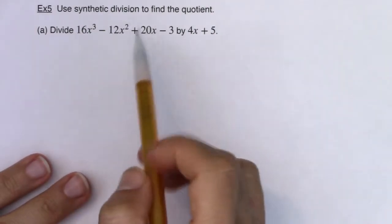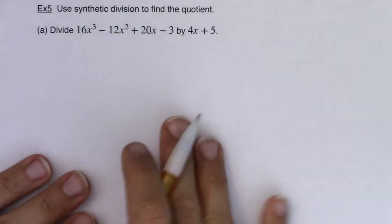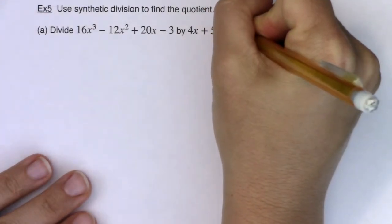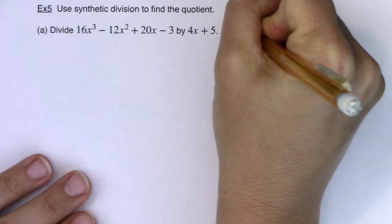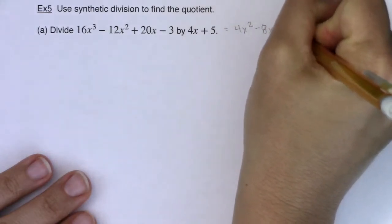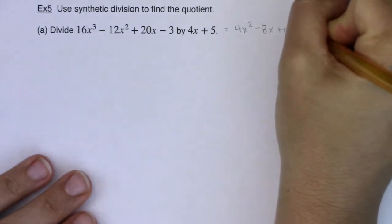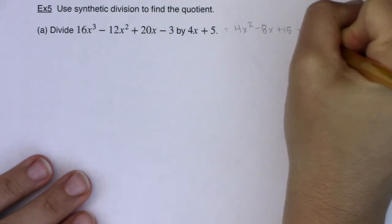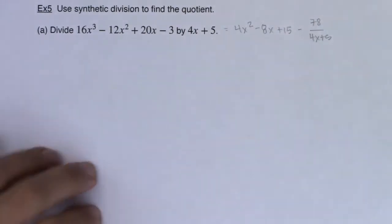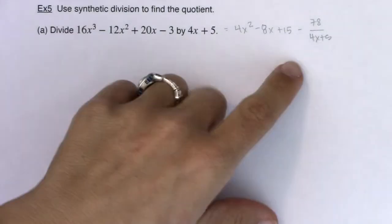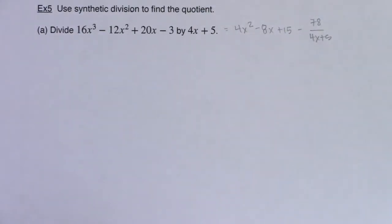And we did this example, this was example two, we did this previously by long division, so we know that the answer to this is going to be 4x squared minus 8x plus 15 minus 78 over 4x plus 5. And when you see the work that's involved in doing synthetic division for this, it might actually just be simpler for you to use long division, and that's fine, you can use either one.